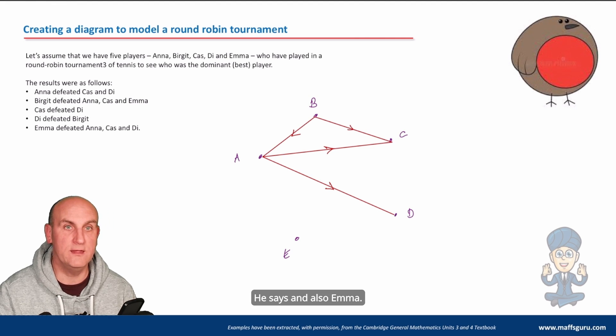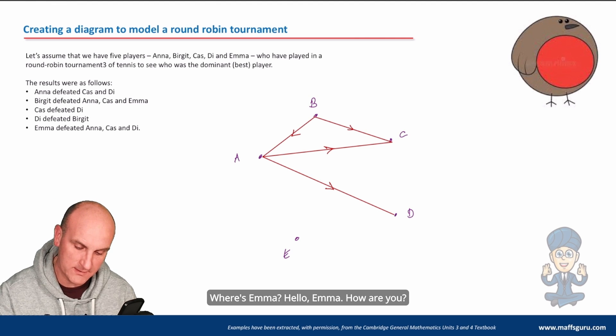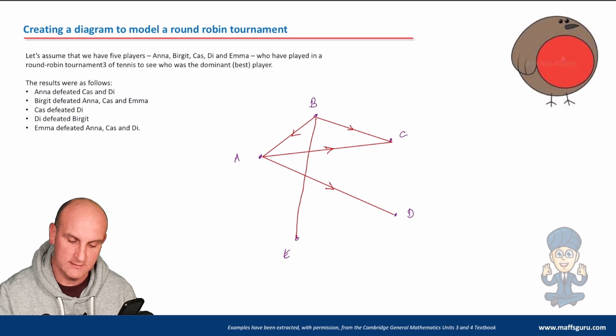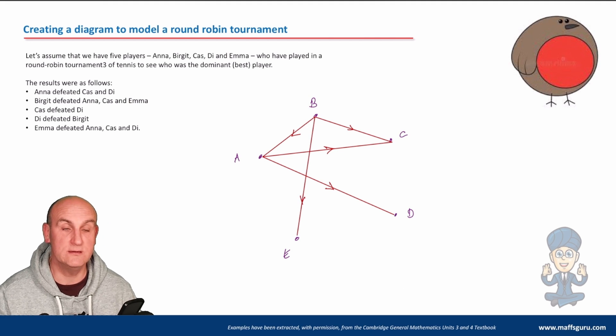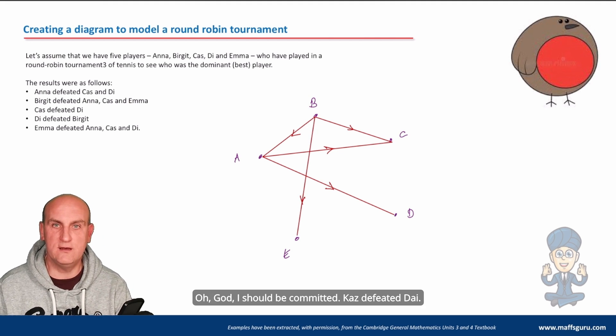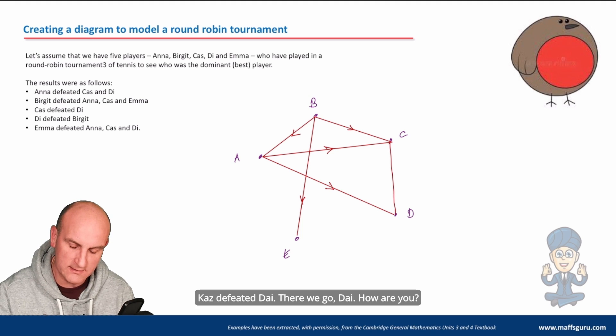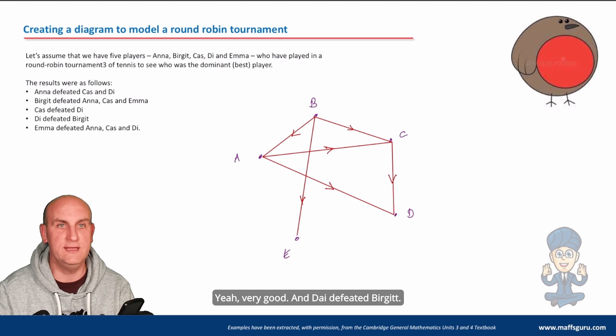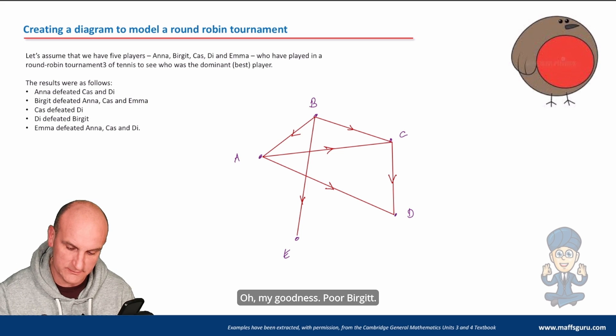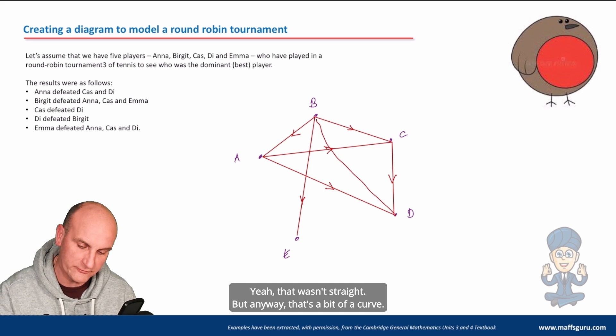Burgett defeated Anna, so I'm going to draw a line. And also Emma - where's Emma? Hello Emma, how are you? I'm talking to this as if it's an actual person. My god, I should be committed.